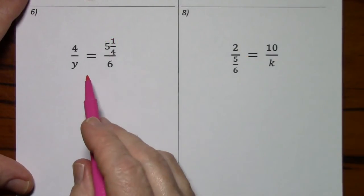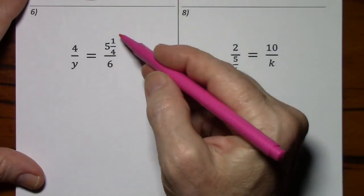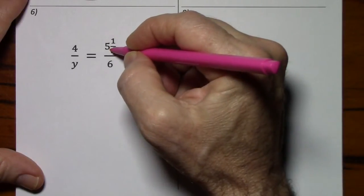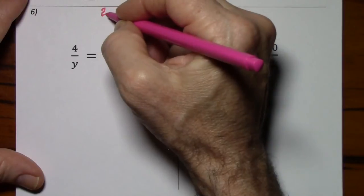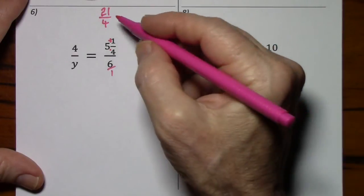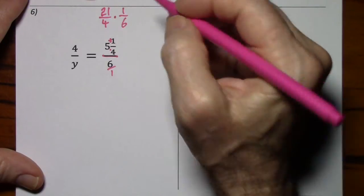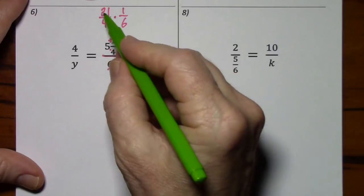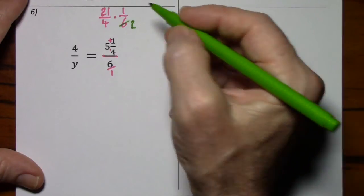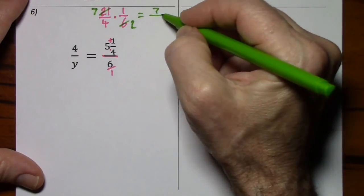We have two more to take care of. Looking at this one, variables in the denominator. Rather than just multiply by the LCD, I think I'm going to clean this up first. This is kind of a mess to look at. So let's make this improper. 21 fourths. This is 6 over 1. So 21 fourths divided by 6 over 1 means times 1 sixth. Now if you can notice, there's a common factor of 3 in each of these. Divide by 3 leaves you with 2. Divide by 3 leaves you with 7. So we have 7 eighths.